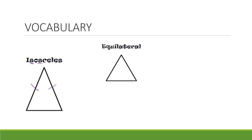On the other hand, when we hear the word equilateral, when you hear the word equal, we think equal. And lateral just means side. So an equilateral is a triangle with three congruent sides. We want to make sure that we understand the vocab and understand what they're trying to say when they tell us it's an isosceles triangle versus an equilateral triangle.